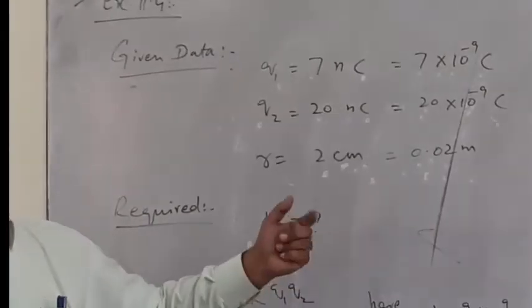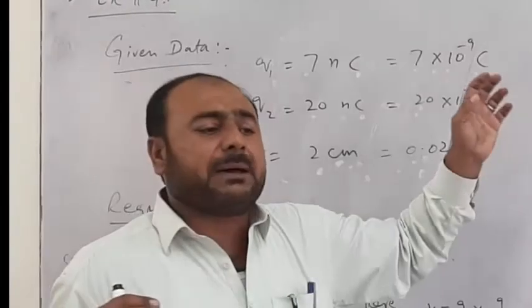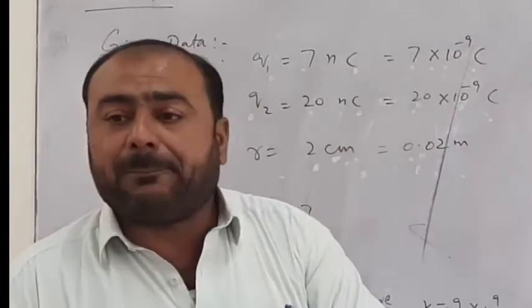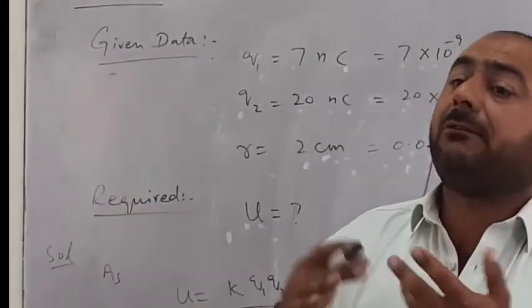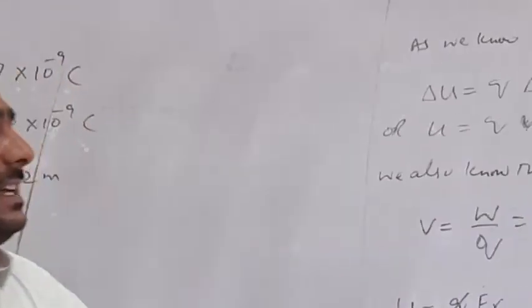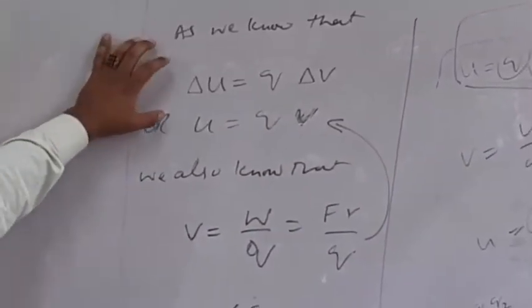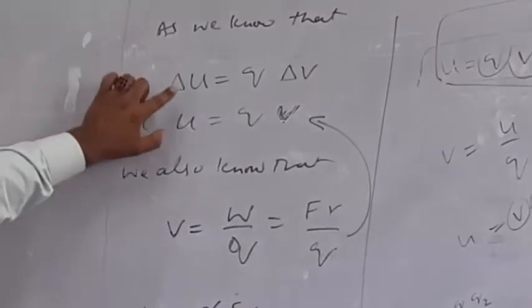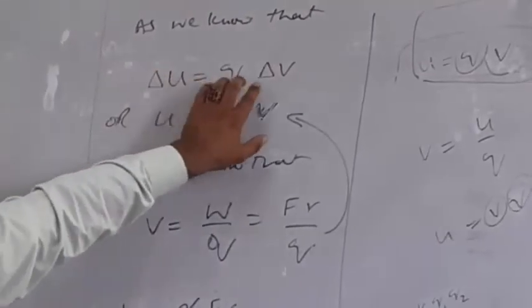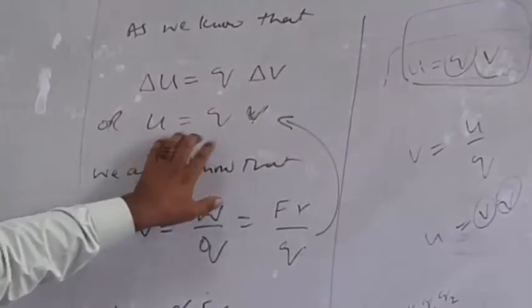Potential energy equals QV. V is work divided by charge, so potential difference equals work divided by charge.